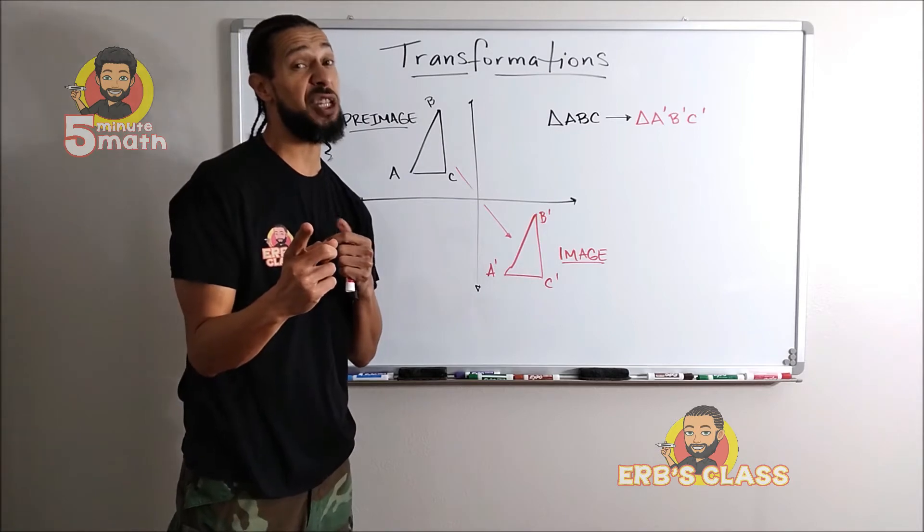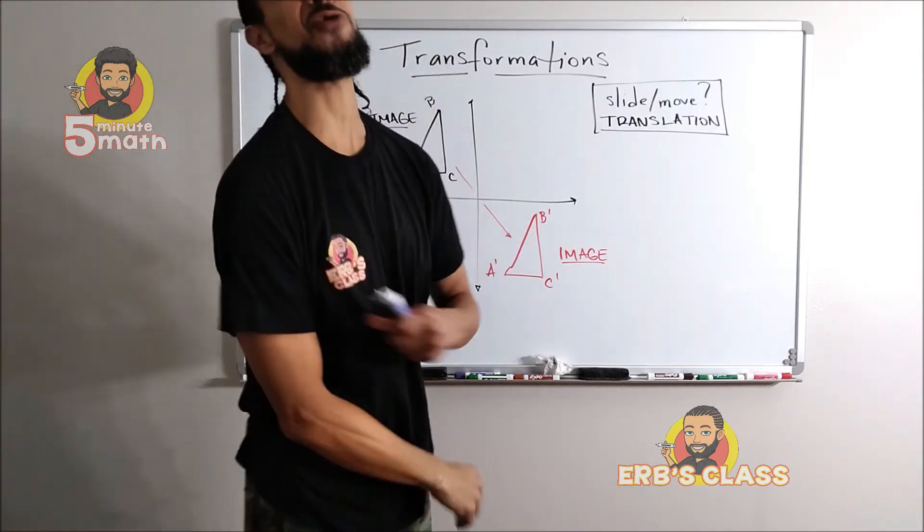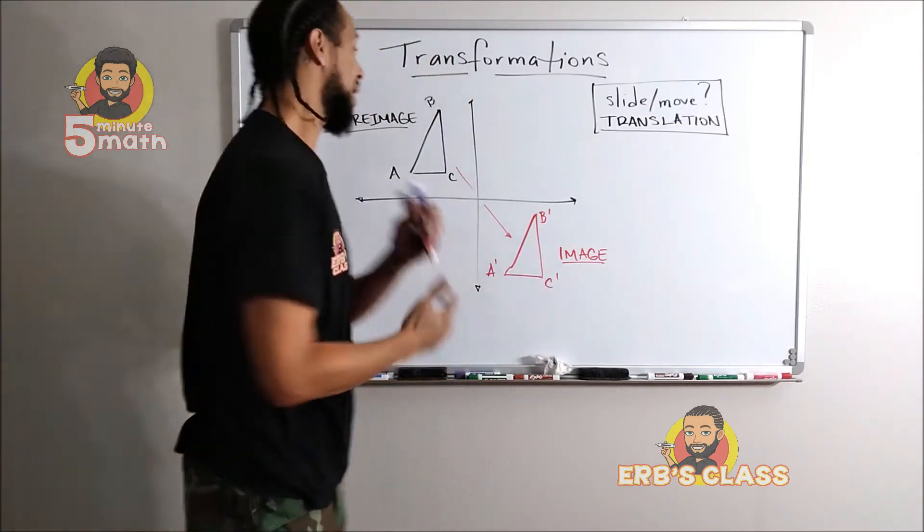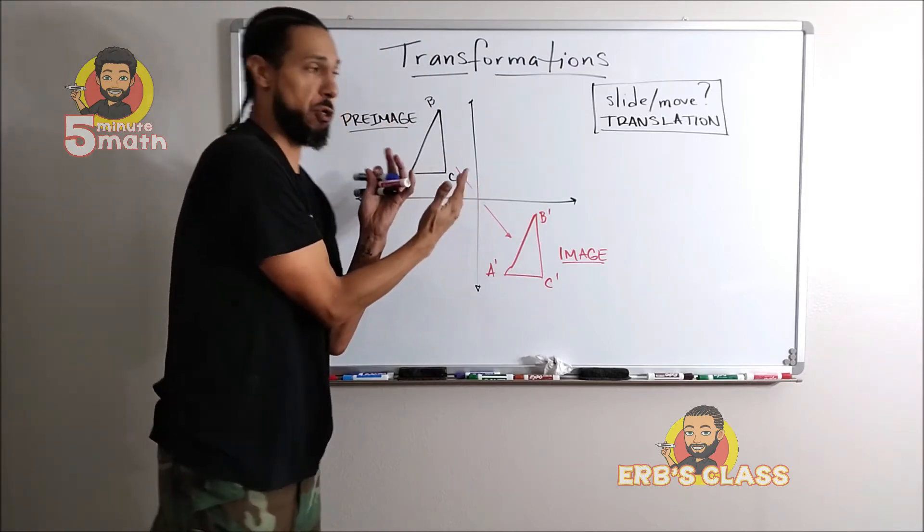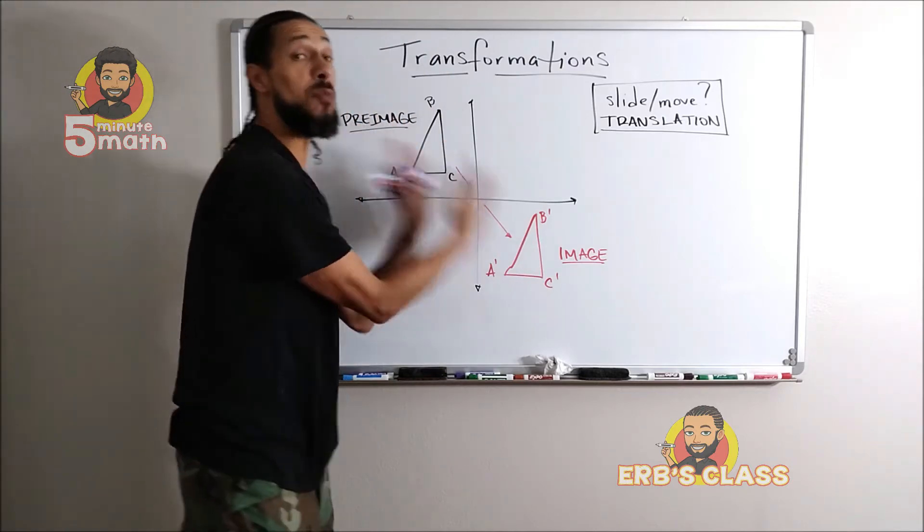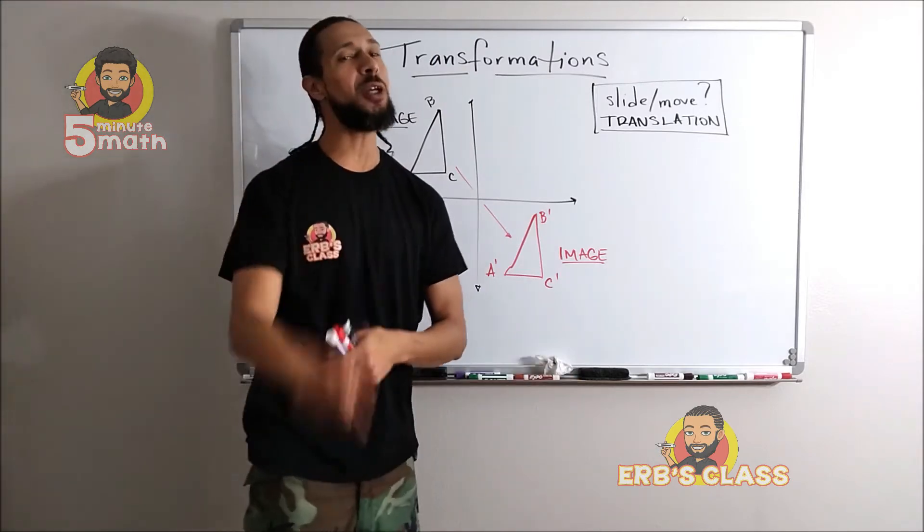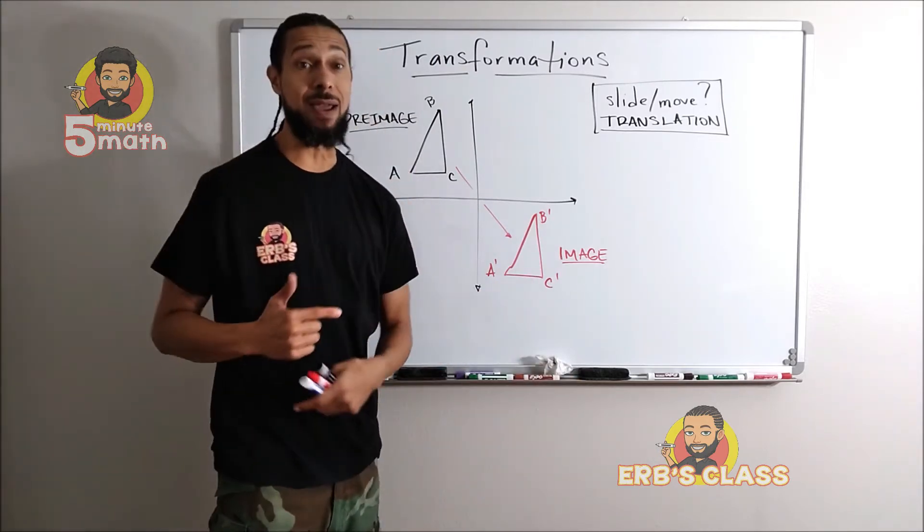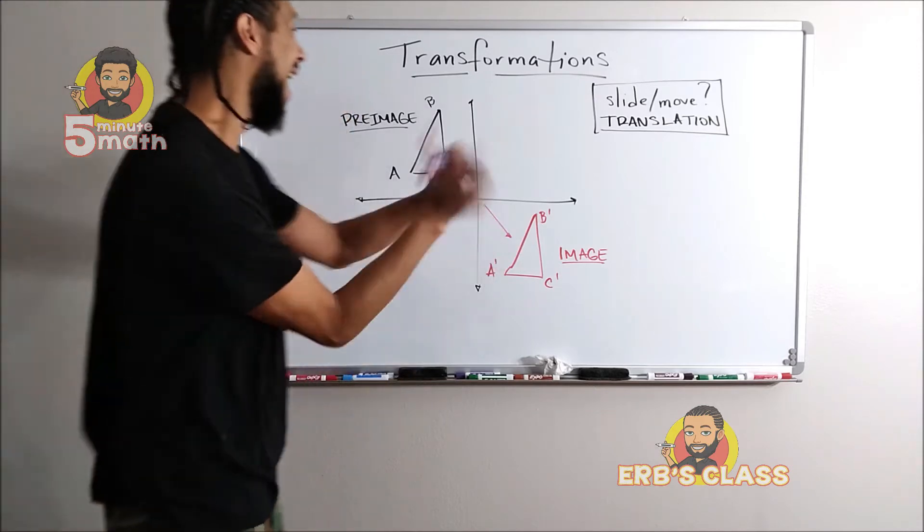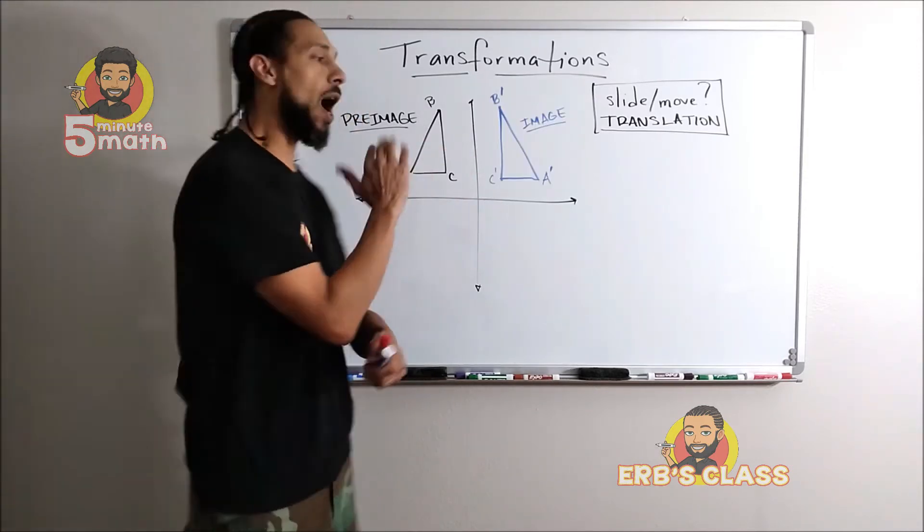Now this move or this slide has a special name for it. It's called a translation. So whenever I take a shape or a figure or anything in geometry and I just move it to a different place, that's called a translation. But that's not the only way that we can transform a geometric shape. Let's talk about another way.